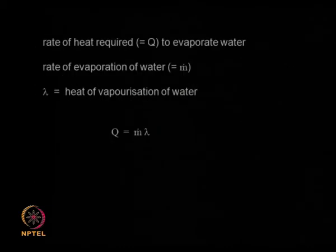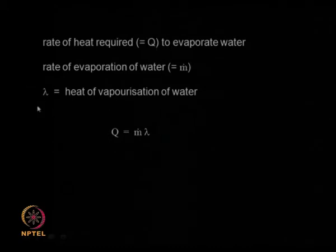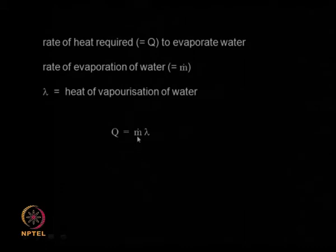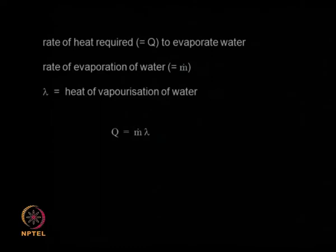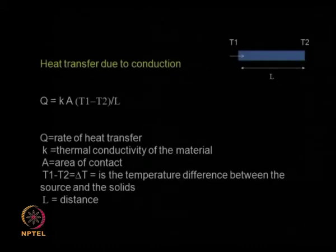The rate of heat required depends upon the amount of water that is evaporating and the heat of vaporization of water. The rate of heat required Q equals ṁ × λ, where λ is the heat of vaporization and ṁ is the rate of evaporation of water — in grams of water per minute or kg of water per hour getting evaporated during the process.